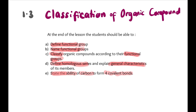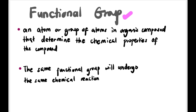Let's start with functional group. A functional group is an atom or group of atoms in an organic compound that determines the chemical properties of the compound. The same functional groups will undergo the same chemical reactions — meaning they have the same chemical properties.